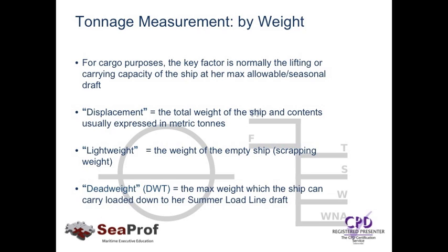The converse of vessel displacement is lightweight — the ship's lightweight. This is the weight of the empty ship: no crew, no cargo, no fuel, absolutely empty — just the weight of the steel. This is what the scrapper wants to know; if buying your ship for scrap, he pays for the lightweight and nothing else. If we deduct the lightweight figure from the displacement figure, this gives us the deadweight figure, the DWT — the maximum weight the ship can carry loaded down to her summer load line draft. If you look at the diagram, you can see the load line and a summer mark labeled S.